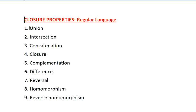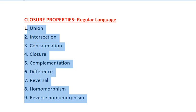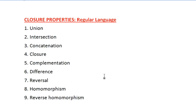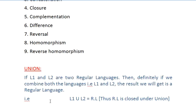The nine closure properties for regular languages are: union, intersection, concatenation, closure (Kleene star), complementation, difference, reversal, homomorphism, and reverse homomorphism. There is one more property called infinite union, which is not a closure property — we will discuss that later once you have understood these nine.